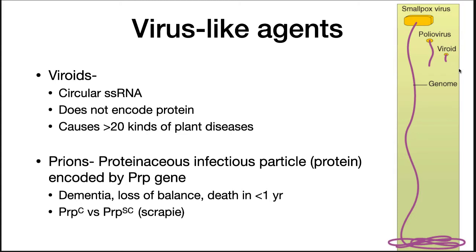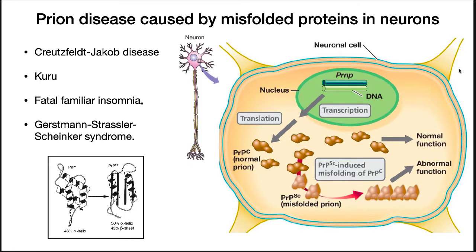Prions are proteinaceous infectious particles encoded by the PRP gene. The accumulation of them inside host neural tissue causes dementia, loss of balance, and death in about one year. The PRP protein is a normal protein found in mammals. Disease only occurs when this protein shifts from the normal form to the disease form. The PRP protein is hypothesized to function in the assembly of single molecules at the cell's surface. However, when this protein misfolds, it will polymerize and accumulate in plaques, precipitating in the cells and interfering with neural function.